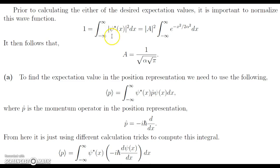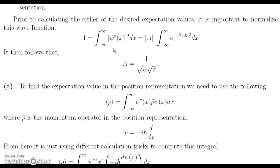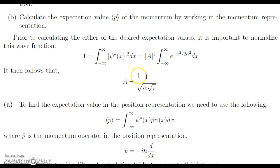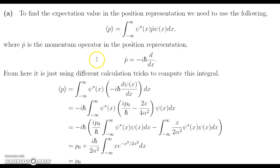When we take the modulus squared of the wave function, we get e to the negative x squared over 2 alpha squared. The modulus squared of the complex exponential part is 1, so that part cancels out. Pulling A squared out front, and since we can choose A to be real and positive, when we evaluate the integral we get A equal to 1 over the square root of alpha times the square root of pi. This is quite a nasty value, so I'm going to leave it as A as long as possible and fill it in when necessary.